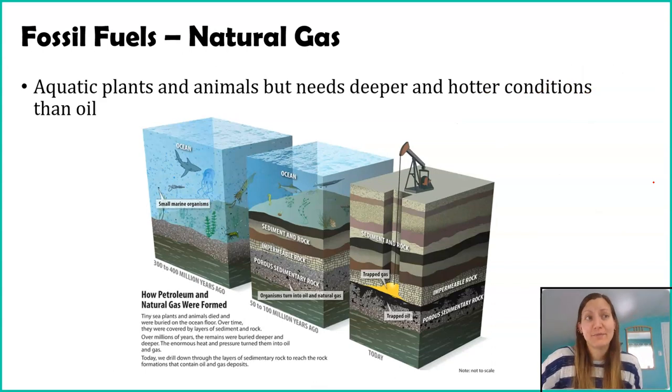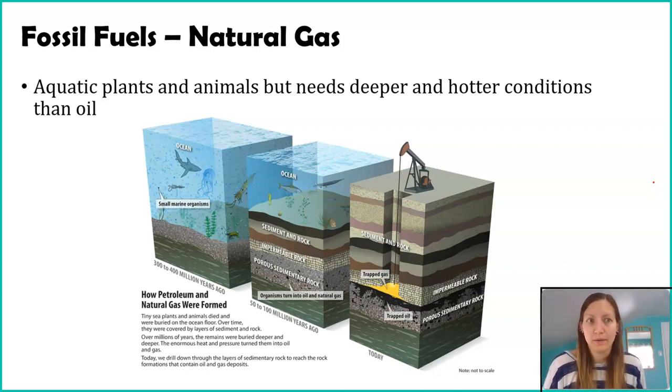Now, our last type of fossil fuel is natural gas. Natural gas is pretty much made identically to oil. It's still aquatic plants. It's still aquatic animals. They die. They fall to the bottom. They compress, they compress, they compress. You add heat, you add time, you add compaction and bam, you've got oil. You add more heat and more time and more compaction and it's natural gas. So natural gas actually starts as oil. And then as oil gets hotter or it gets more compacted, it transforms into natural gas.